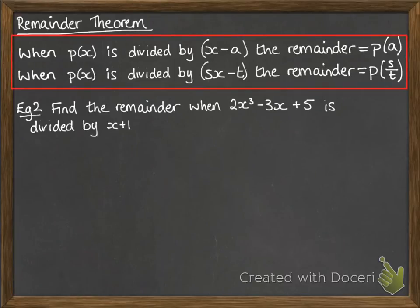So let's see how this really works. We want to find the remainder when 2x³ minus 3x plus 5 is divided by x plus 1. So we're calling that cubic there the polynomial p(x). We're going to put in the value of -1. If we're dividing by x plus 1...